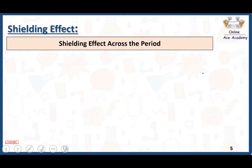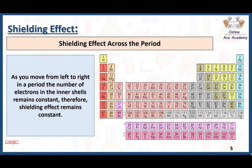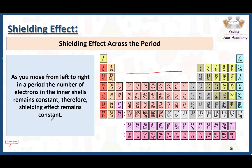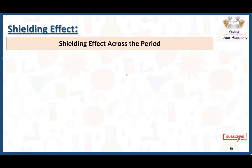Shielding effect across the periods: elements in the periodic table are arranged in periods and groups. Moving left to right is a period; moving top to bottom is a group. As you move from left to right in a period, the number of electrons in the inner shells remains constant, so the shielding effect also remains constant. Elements like lithium, beryllium, boron, carbon, nitrogen, oxygen, fluorine, and neon all have the same number of shells, meaning the same shielding for the outer electrons.